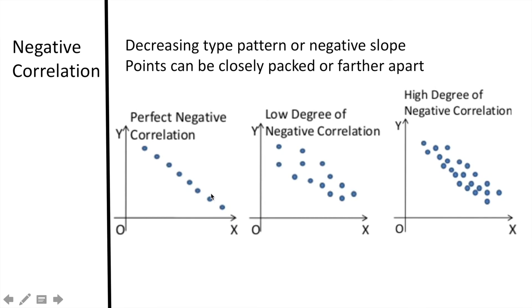A graph is said to have a negative correlation if there is a decreasing pattern or a negative slope. The points can be closely packed together or farther apart. Below we see a perfect negative correlation, a low degree of correlation with the points spread further apart, and a high degree of negative correlation with the dots more closely packed together.